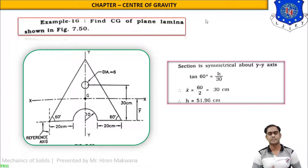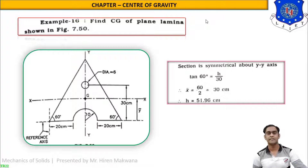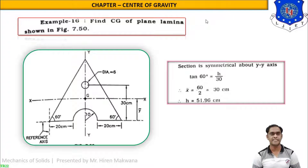In this lecture we will start two more numericals — these are spatial numericals. We have to find the CG of a plane lamina which is symmetrical.